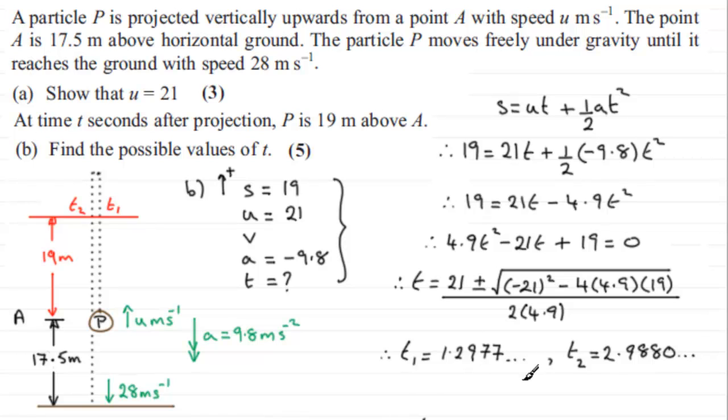Now if we round these to, let's say, three significant figures, then we've got the first time T1 is going to be 1.30 seconds,